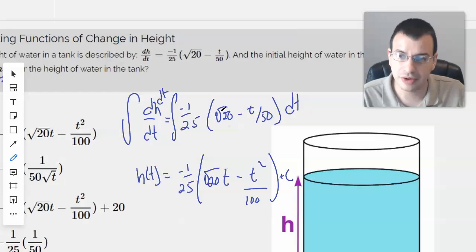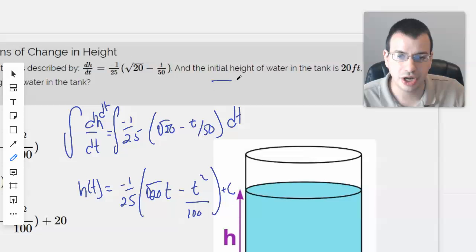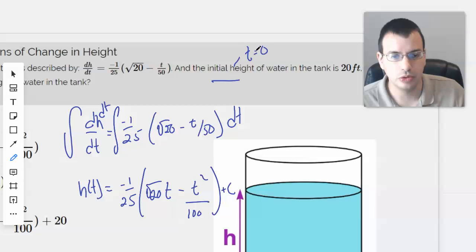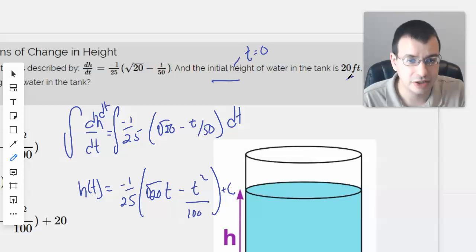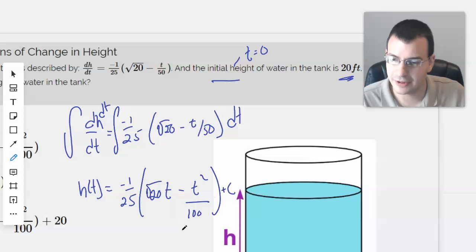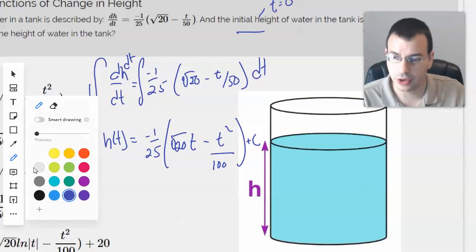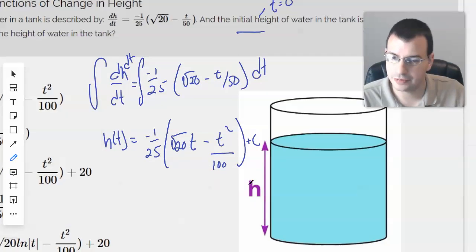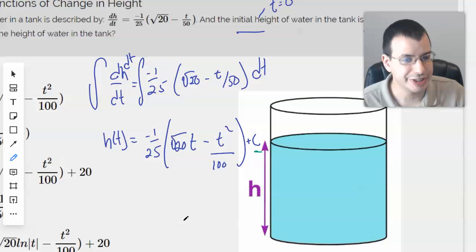But now we're given an initial condition, so we know the initial height, basically when T equals 0, is 20 feet. And so we need to use that to find what the full equation would be. So basically to solve for what this constant C is.